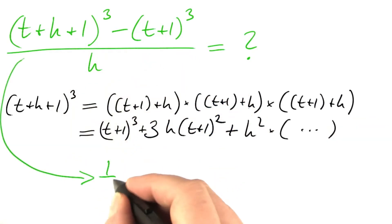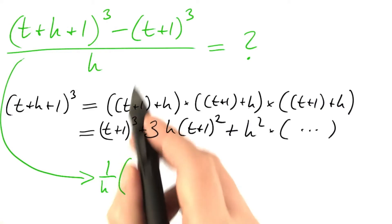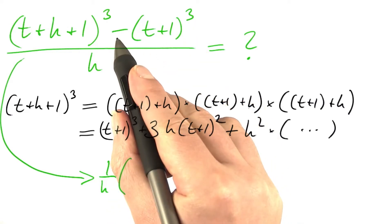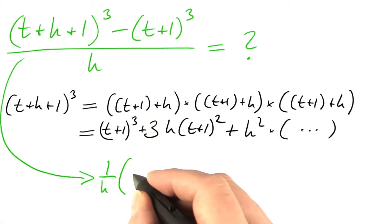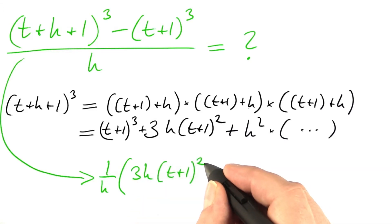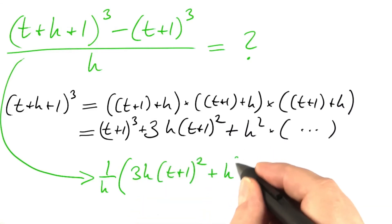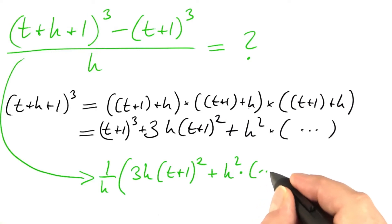So what do we get? 1 over h times t plus 1 to the third power, t plus 1 to the third power cancels. It's 3 times h times t plus 1 squared plus h square times something.